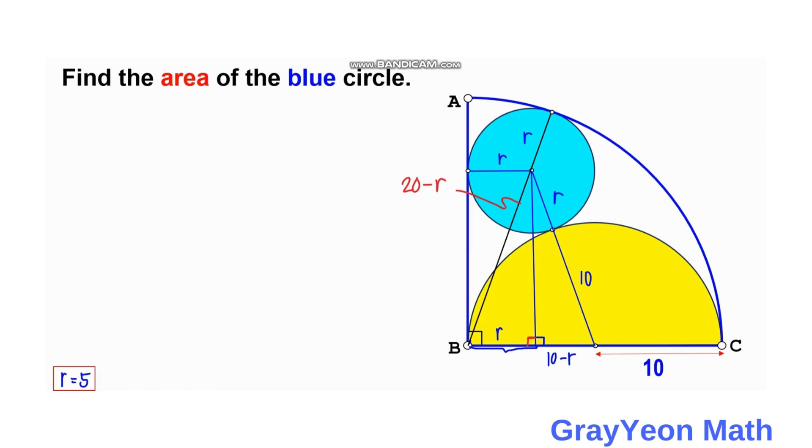So another way to find the value of r is if we draw this, if we make the semicircle a quarter circle and draw this. Since this is 10, then from this is 10, so this should be 10 also because by symmetry.